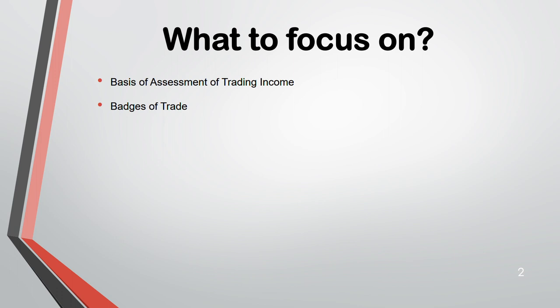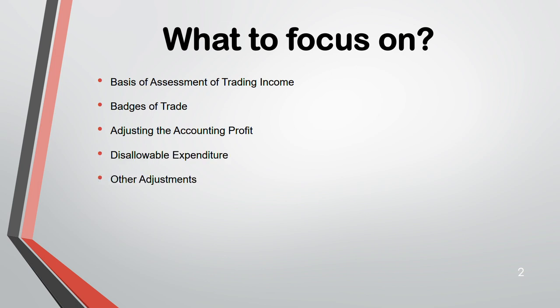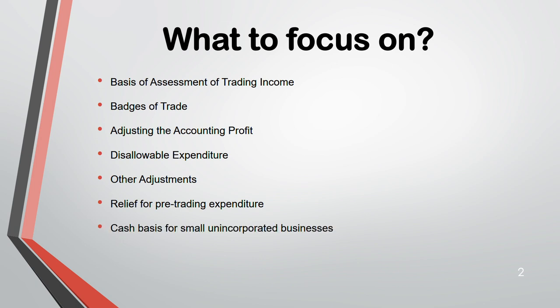We'll cover badges of trade — factors that determine whether something is a trade. Then we'll go through how to adjust accounting profit, disallowable expenditure, other adjustments, relief for pre-trading expenditure, and cash basis for small unincorporated businesses. We'll also do practice objective test questions from Section A, and finally summarize the lecture.